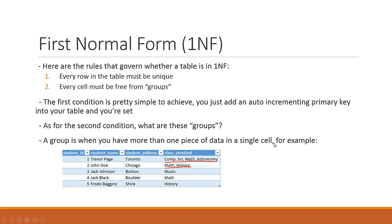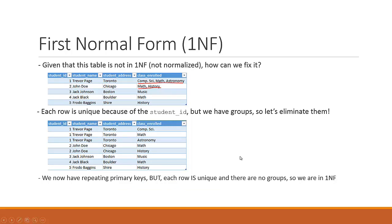The first condition is pretty simple to achieve — all you need to do is add an auto-incrementing primary key into your table and you are set. We've talked about primary keys before, and this is why we use them: to make sure that every row is unique. Now as for the second condition, this is a bit more confusing. What are these groups? A group is when you have more than one piece of data in a single cell. For example, if in the classes enrolled column I had 'computer science, math' or 'astronomy, math, history' — these two rows are bad. They break first normal form because you're not allowed to have multiple data points inside of a single cell.